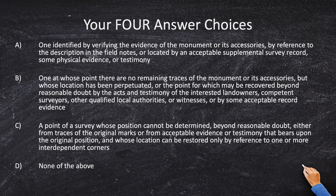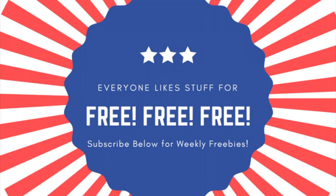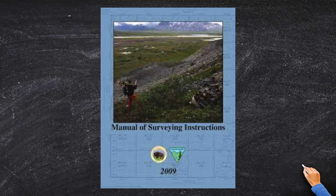Every surveyor watching this video who is going to sit for the California exam should own a copy of the BLM manual. If you don't have a hundred dollars to spend, you can actually download the BLM manual for free from the BLM website. Pull it out and go to the section on existent, obliterated, and lost corners, and read all three of those definitions. Pause the video right now and go read them.